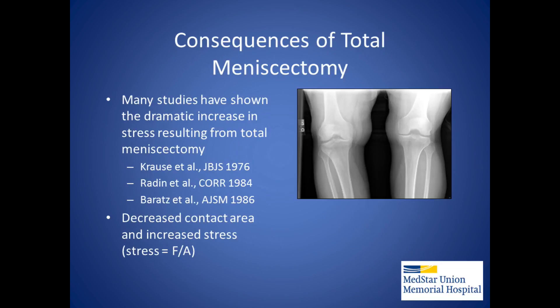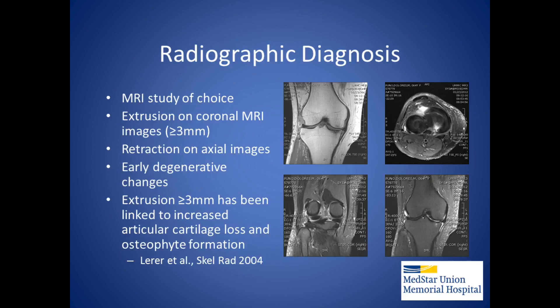Numerous studies have shown a dramatic increase in stress resulting from total meniscectomy, as the result of decreased contact area in the involved compartment. MRI is the study of choice in evaluating meniscal injuries. Extrusion on coronal MRI of more than 3 millimeters is consistent with a meniscal root tear, but has also been linked to increased articular cartilage loss and osteophyte formation.